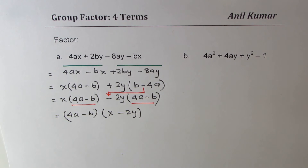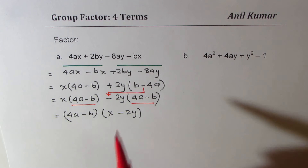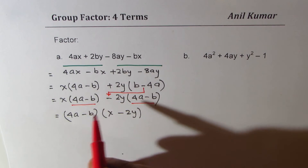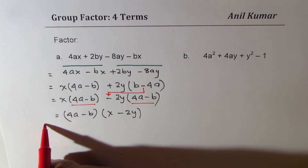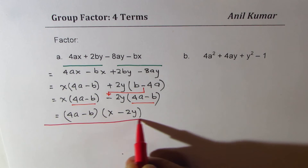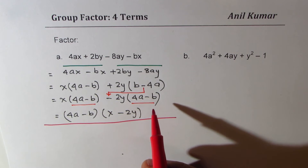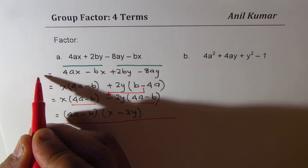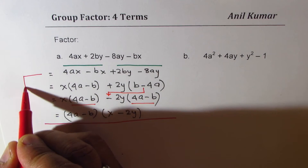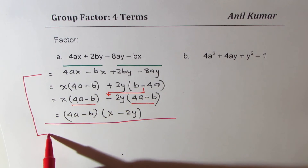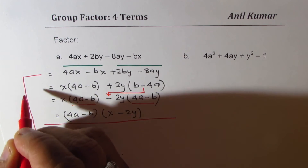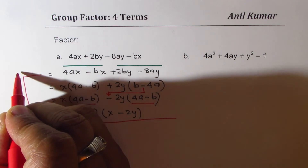So what we did was factor out the minus and rearrange. Now, since we have these two factors exactly similar, we can write 4a minus b as a common factor, getting x minus 2y as the other factor. That is how you do it. Now for students who had rearranged, let's see how things change and how easy it becomes — this is our method 2.